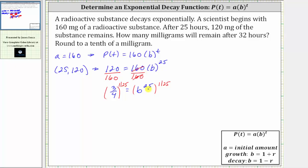Notice now on the right side, we have powers raised to powers, and therefore we multiply the exponents. 25 times 1 over 25 is equal to one, giving us b to the first or b on the right side. On the left side, we have 3 fourths raised to the power of 1 over 25.